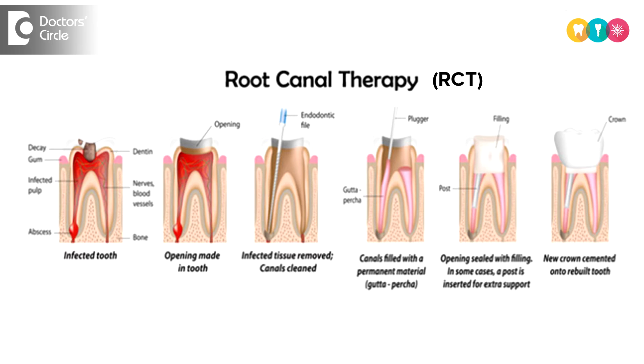Root canal is a procedure where the infected nerve or the pulp tissue within the teeth is removed. In the space of the nerve, artificial fillings are filled and then a crown is given over it. In a root canal, what we do is we see that the communication between the teeth, bone and the surrounding tissues around the teeth are shut down.